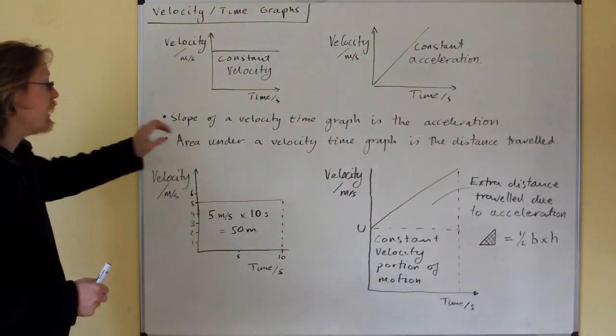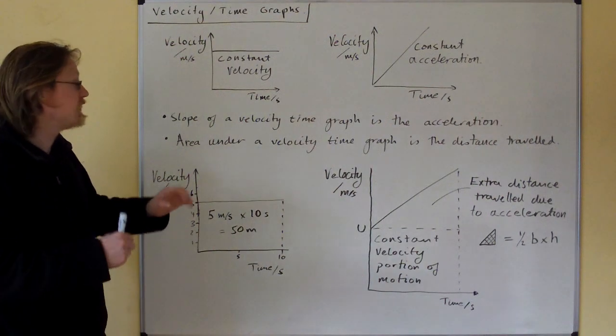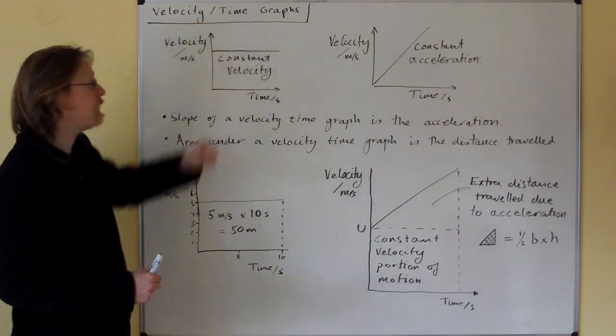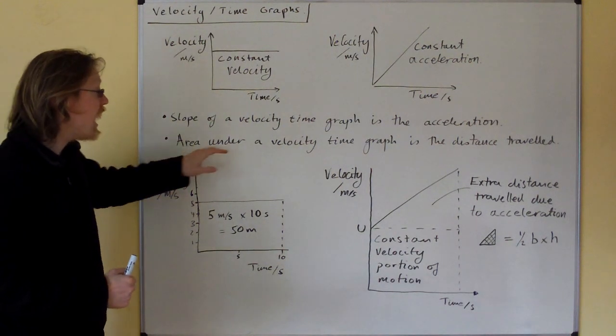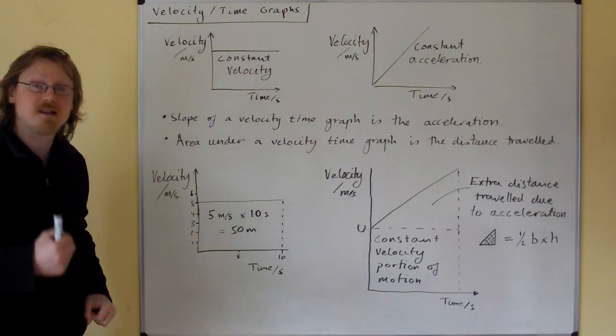So once again, the slope of a velocity time graph is the acceleration. And if that's flat, that means we have no acceleration and a constant velocity. And the area under the velocity time graph is the distance travelled.